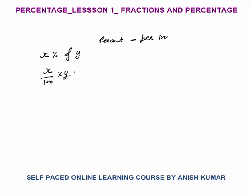Whenever you have to open the percentage, you have to divide by 100. For example, 32 percent of 75 becomes 32 by 100 into 75. So whenever you need to open the percentage, divide by 100 — as the name suggests, percent means per hundred. Now what if a number or fraction is given to you and you want to convert it into percentage?